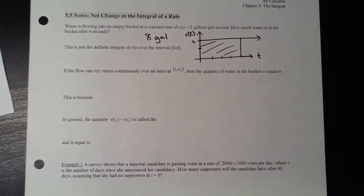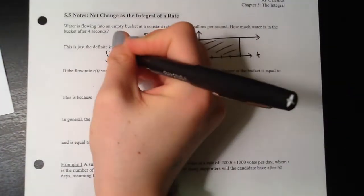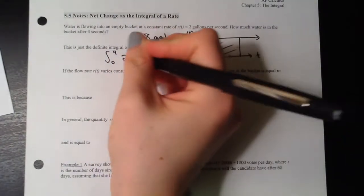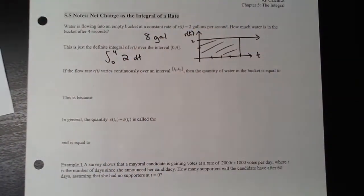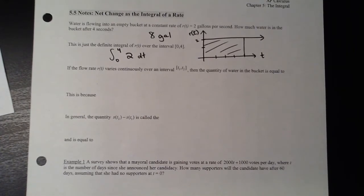A definite integral represents area under a curve, so we use r(t) as our function and find the area under it from 0 to 4. The area from 0 to 4 under the constant function 2 — a horizontal line — gives us the rectangle. I'm purposely starting with an easy example so we can use this framework when we have much more complicated rates.